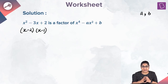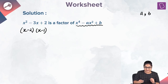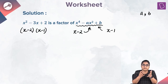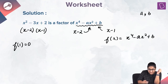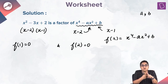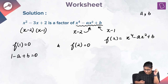If x square minus 3x plus 2 is a factor of x raised to power 4 minus Ax square plus b, then x minus 2 and x minus 1 are individual factors. Defining f of x as x raised to power 4 minus Ax square plus b, we can say f of 1 equal to 0 gives 1 minus a plus b equal to 0, and f of 2 equal to 0 gives 16 minus 4a plus b equal to 0.